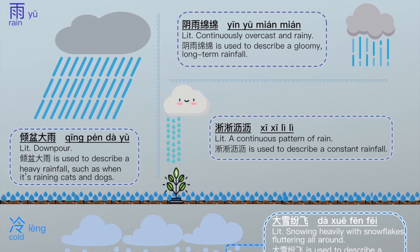Idioms that describe rainy days. 形容下雨天的成语。 轻盆大雨 — Downpour. 轻盆大雨 is used to describe a heavy rainfall, such as when it's raining cats and dogs. 阴雨绵绵 — Continuously overcast and rainy. 阴雨绵绵 is used to describe a gloomy, long-term rainfall — a continuous pattern of rain.